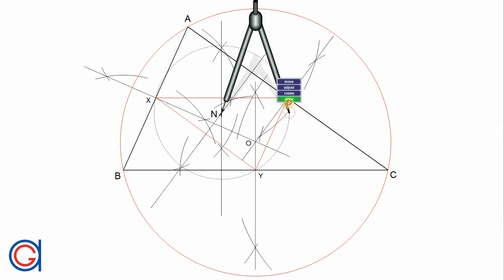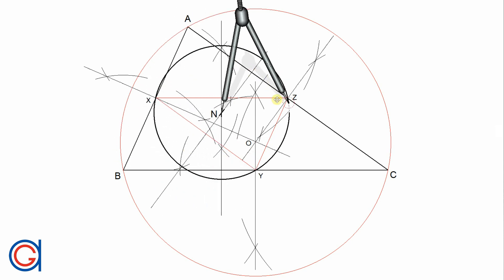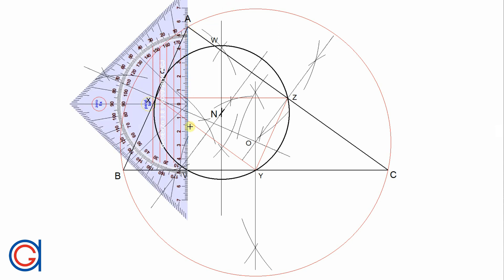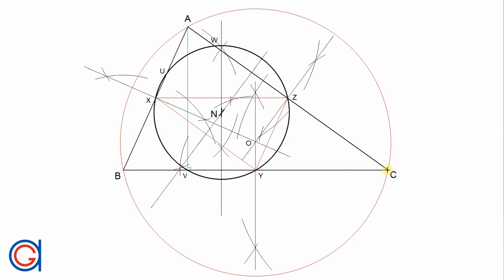Setting our compass on N and with radius NX, we draw a circle in a thicker line, which is the nine-point circle of the given triangle ABC. We obtain three new points U, V and W, which we mark in blue. These points are the perpendicular feet or bases of the triangle. We then draw the three perpendicular heights of the triangle by joining vertex A to point V, vertex C to point U, and vertex B to point W, all in blue lines.